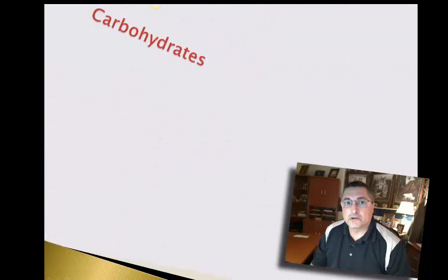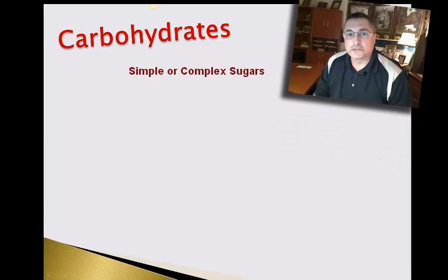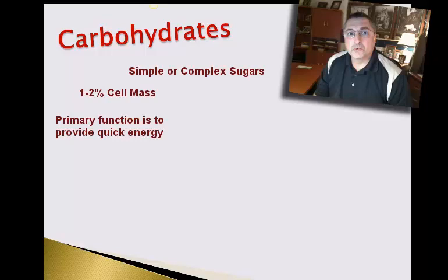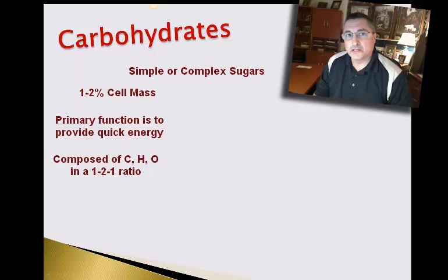Let's start our discussion by looking at carbohydrates. Carbohydrates are also known as sugars or starch, and they represent about one to two percent of the cell mass. Their major function is to supply the cell with an energy source. Carbohydrates are always easy to identify because they're made up of only three elements — carbon, hydrogen, and oxygen — typically found in a one to two to one ratio.